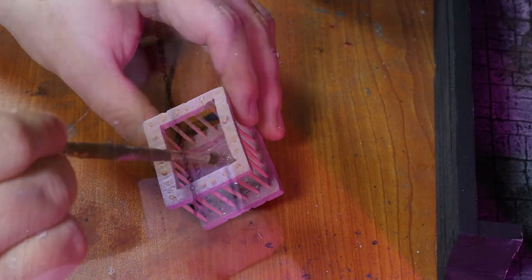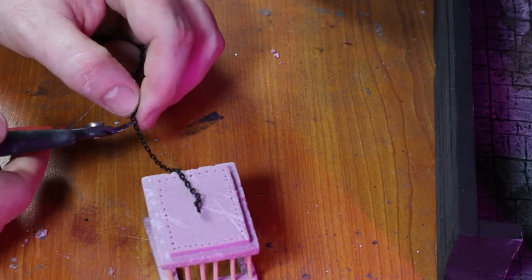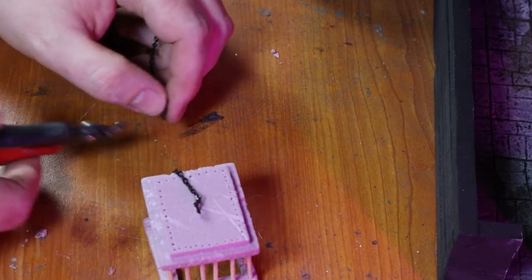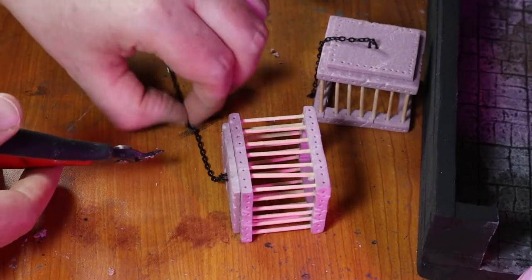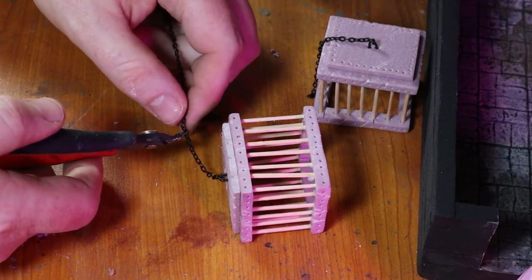I leave that chain like that and do the same thing to all the cages, but I clip each of the chains just a little bit shorter or longer than the previous one. That way they have some variety—maybe some of the chains have been broken or something like that.